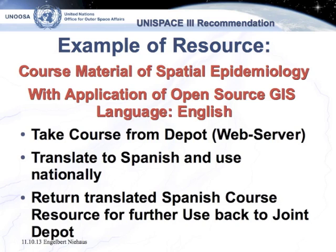As an example of a resource: a course on spatial epidemiology using open source geographic information systems in English. A member state or institution can take the course from the depot — perhaps a web server — translate it into Spanish or another national language so it is better applicable, use it nationally, and the Spanish translation of the e-learning course is then returned to the joint depot for further use by other UN member states.